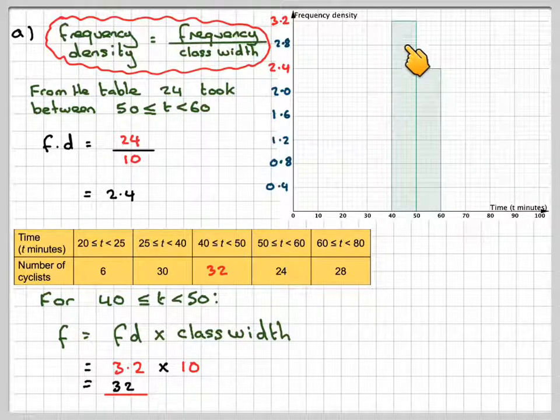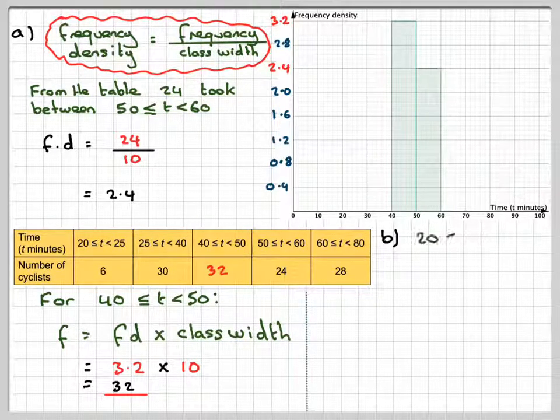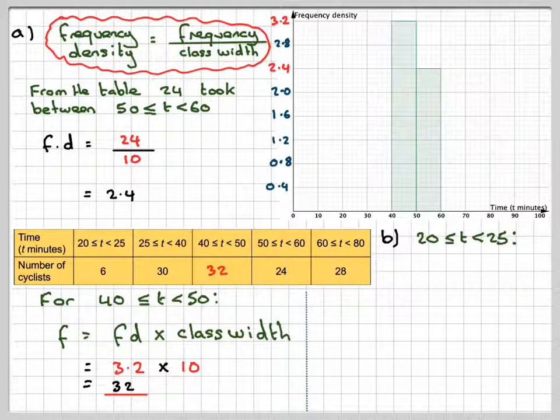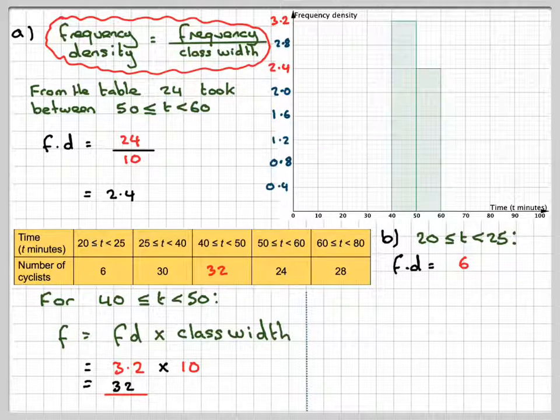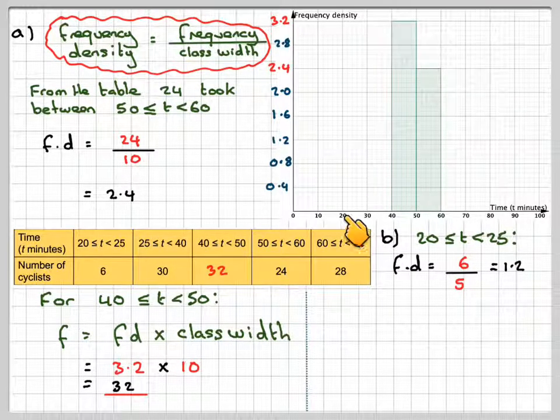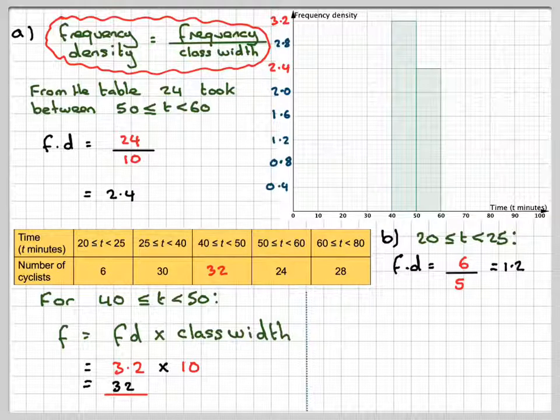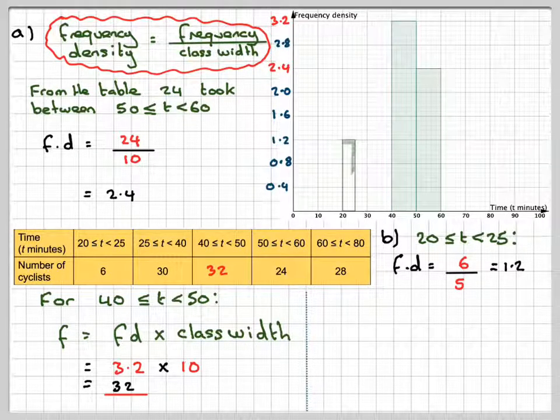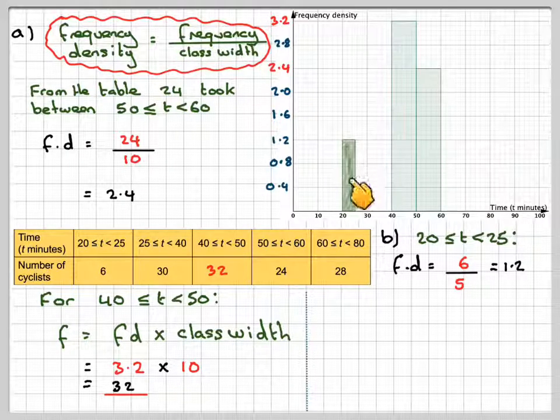So this column here represents 32 cyclists. We can now work out the rest of the columns. So between 20 and 25, the frequency density will be 6 divided by the class width, which is 5. So 6 divided by 5 gives me 1.2. We need to carefully find 20, and then we only want to go to 25, so it's halfway between 20 and 30, and we need the height of the bar to go to 1.2.